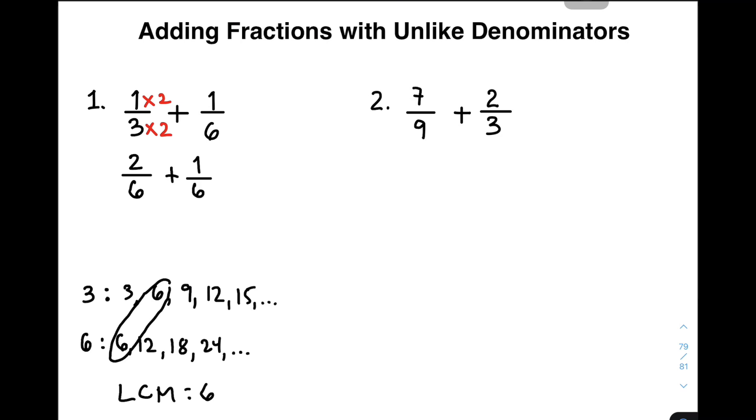In this case, we can create 1 times 2, which becomes 2 over 3 times 2, which becomes 6, plus 1 over 6. As you can see, we already achieved our goal to make the denominators similar or like denominators. In this case, we can easily add these fractions by copying your denominator, which is 6, and simply add your numerator, 1 plus 2, and that will give you 3.